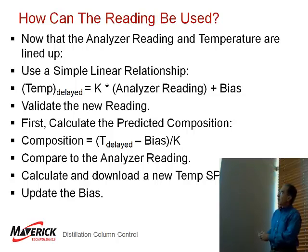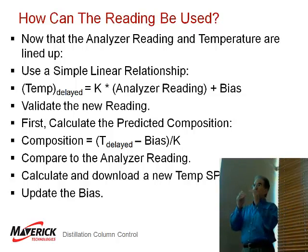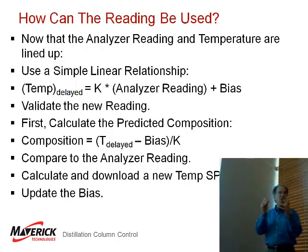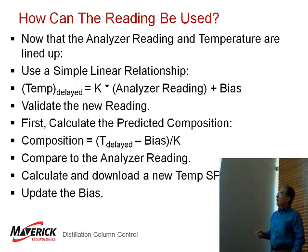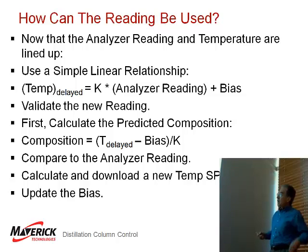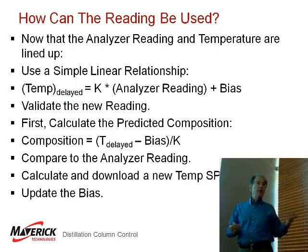Once validated, you calculate the predicted composition from the equation by inverting it, then compare it to the analyzer reading. You have rules to decide whether to use PID or just integral or gain action. Either way, you use some kind of feedback control based on the analyzer reading and the predicted composition, then calculate and download a new temperature set point and update the bias in the simple equation. That's how you use process identification.